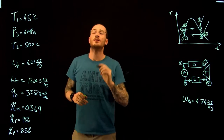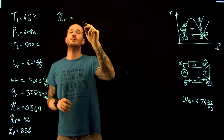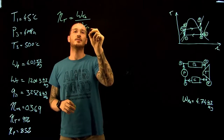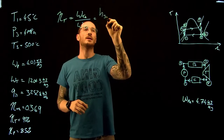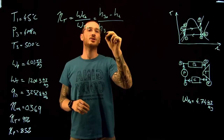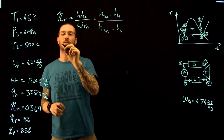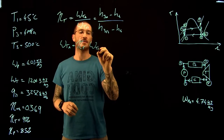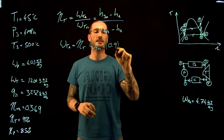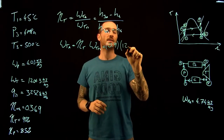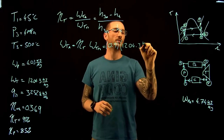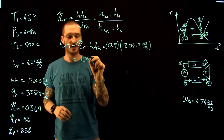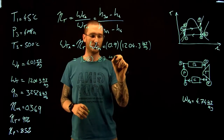Now let's look at the work of the turbine. The efficiency of the turbine is equal to the work of the turbine actual divided by the work of the turbine theoretically, which equals H3 actual minus H4 divided by H3 theoretical minus H4. The work of the turbine actually is equal to the efficiency of the turbine times the work of the turbine theoretically — 0.9 times 1204.3 kilojoules per kilogram — giving a turbine work of 1083.87 kilojoules per kilogram.